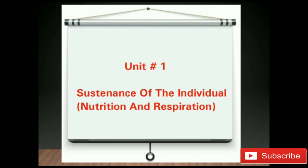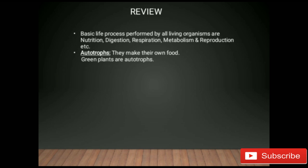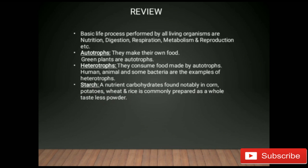In your last class you learned the chapter on sustenance of the individual: nutrition and respiration. In this chapter you learned about the basic life processes performed by all living organisms: nutrition, digestion, respiration, metabolism, and reproduction. You also learned about autotrophs — they make their own food — and green plants are autotrophs. Heterotrophs consume food made by autotrophs, and humans, animals, and some bacteria are examples of heterotrophs.